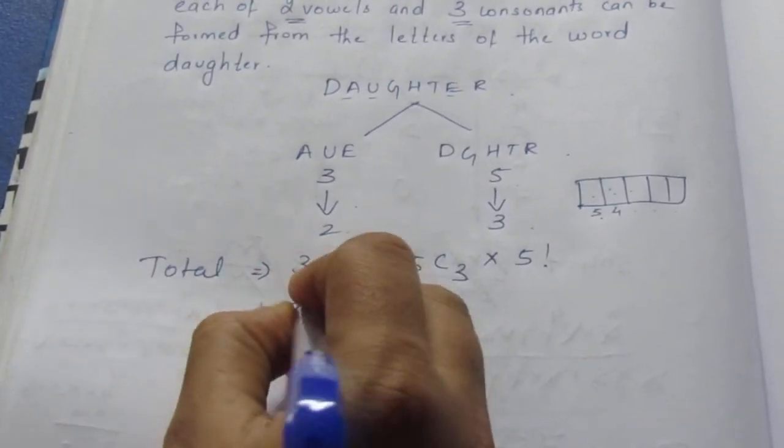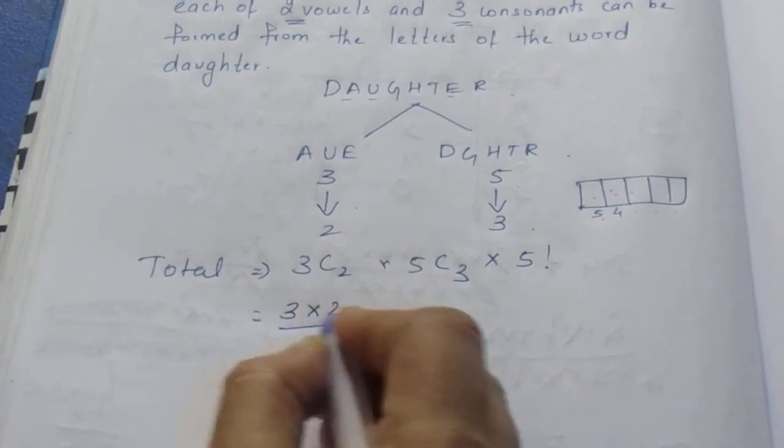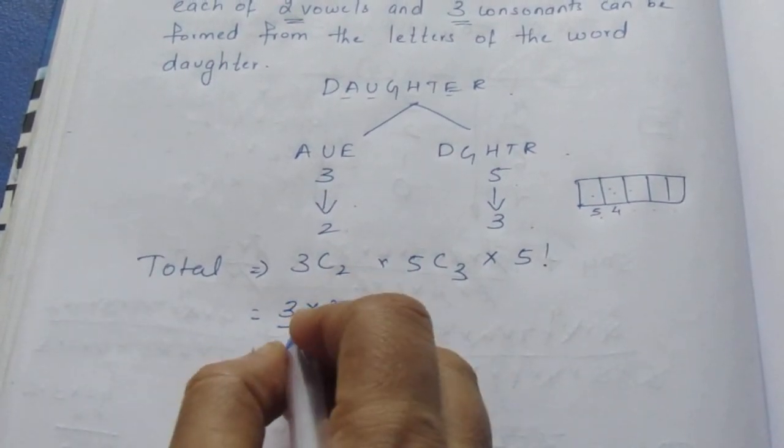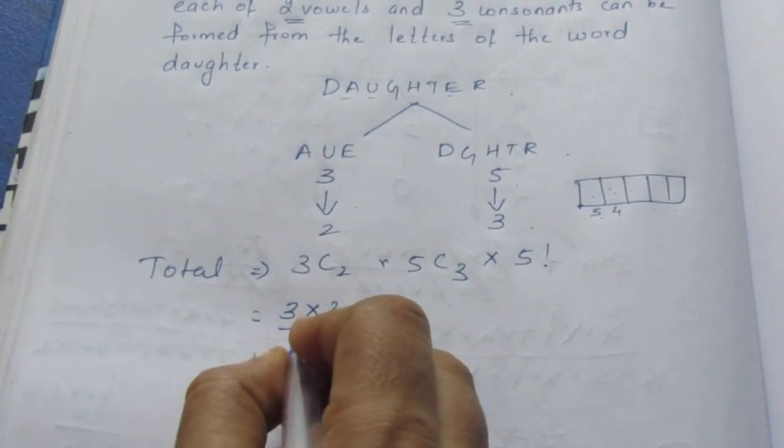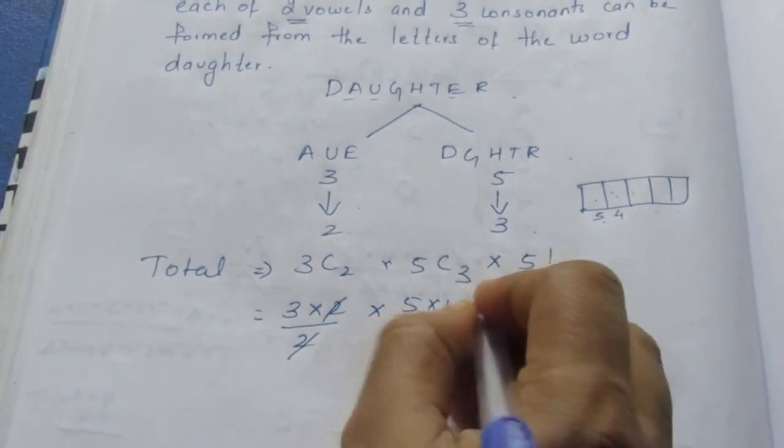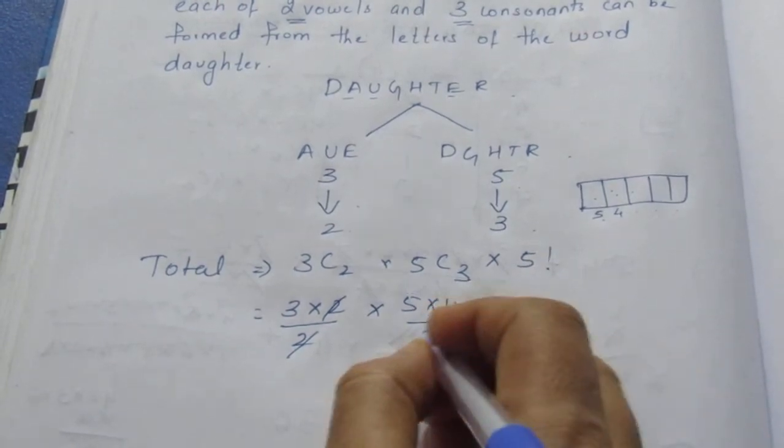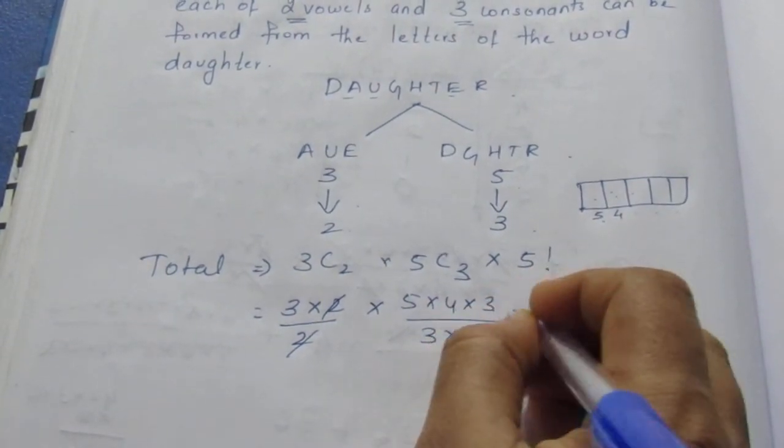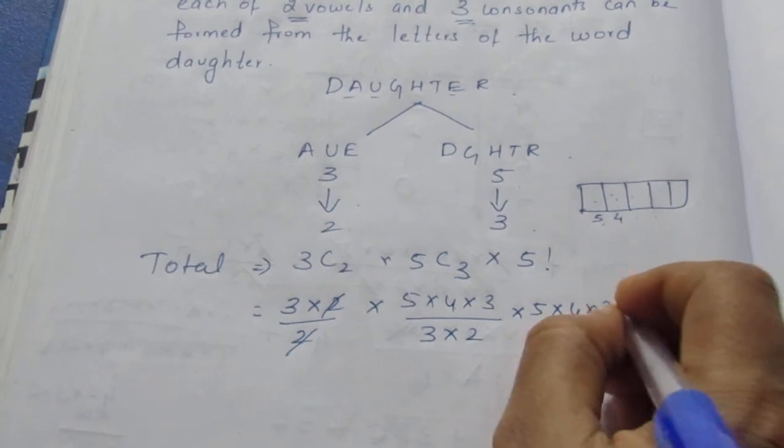Now here it is 3 times 2. Because of 2, I am writing only the two descending numbers. Here it is 2 factorial, so 2. Now for 5, 5 times 4 times 3. Because of three numbers, I am writing three. 5 times 4 times 3 times 2.